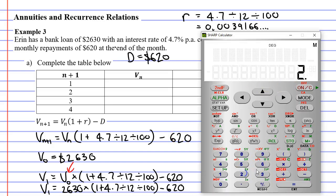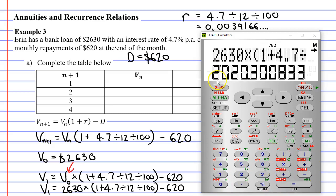All right, so $2,630 times bracket 1 plus 4.7 divide 12 then divide 100, close our brackets, minus 620, and we get $2,020.30.